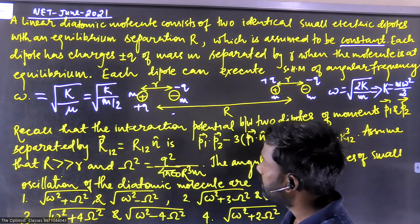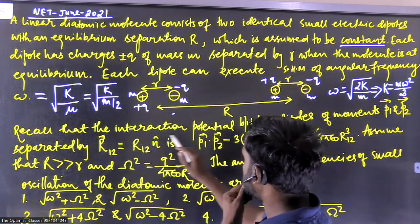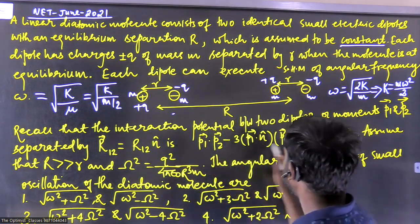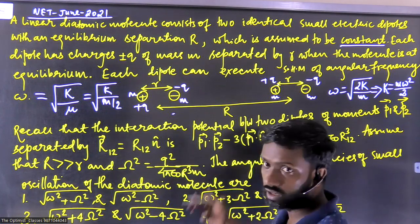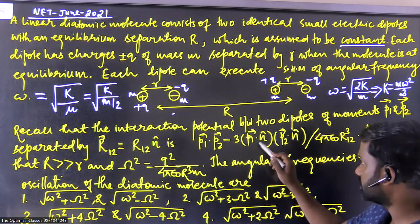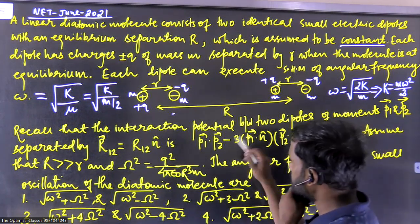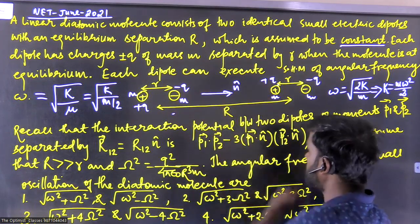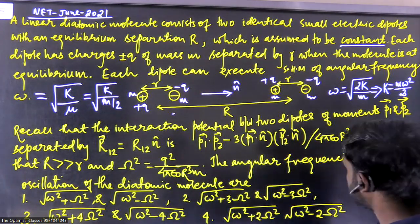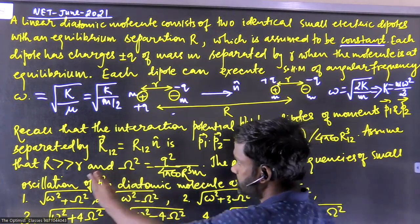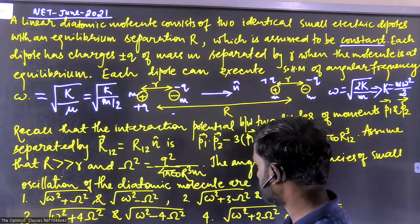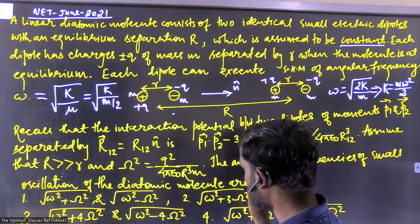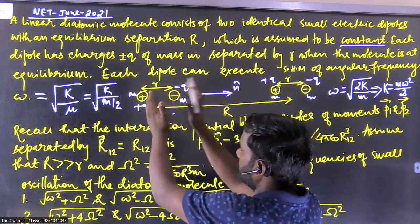The question asks us to recall that the interaction potential between two dipoles of dipole moment p1 and p2 separated by r12 is a standard formula from electrostatics: it involves p1·p2 minus 3(p1·n̂)(p2·n̂), where n̂ is the unit vector from one dipole to another. The question also states that capital R is much greater than small r, and defines capital Omega squared = q²/(4πε₀ r³ m).